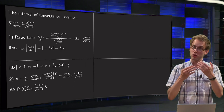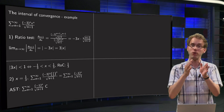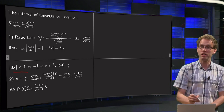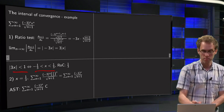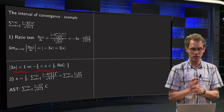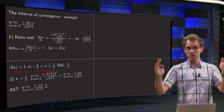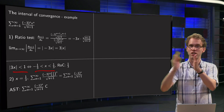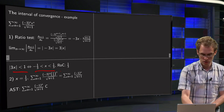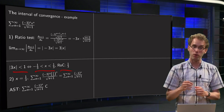So we get the absolute value of minus 3 times x, which equals 3 times the absolute value of x for our ratio test. We know this converges if this limit is smaller than 1, so 3 times |x| must be smaller than 1, meaning x is between minus 1/3 and plus 1/3. The center is 0, the radius of convergence is 1/3. End of step 1, on to step 2.